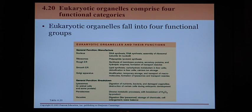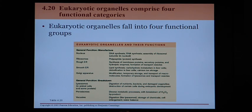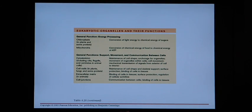Finally, there's a chart in your textbook where eukaryotic organelles fall into four groups. This is a great study chart because it lists all the organelles we talked about and describes their functions. Use this as a review when you begin studying for your test. This concludes chapter four.